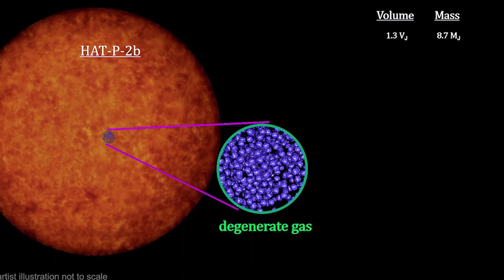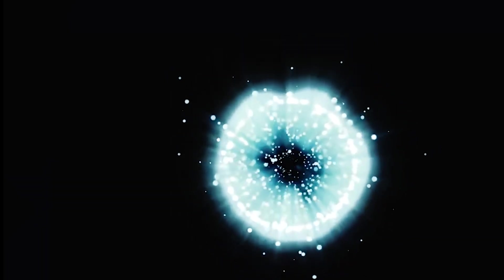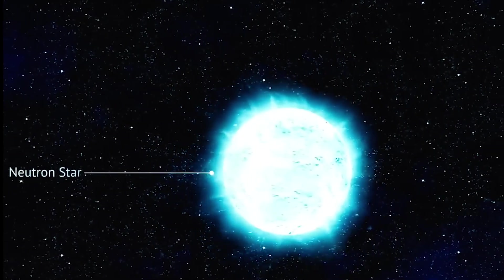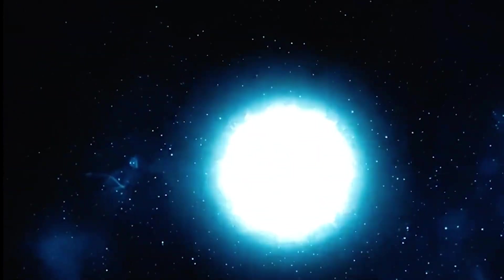The resistance created by this rule is called degeneracy pressure. The harder gravity tries to crush these particles into a single point, the more fiercely they push back. This invisible strength is what keeps white dwarves and neutron stars from collapsing without end, and in extreme cases even ignites the titanic outbursts we call supernovae.